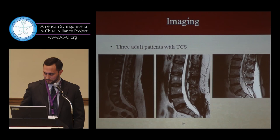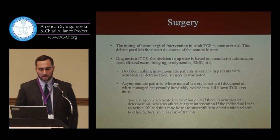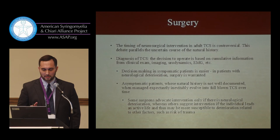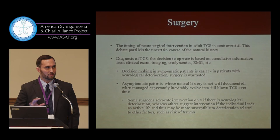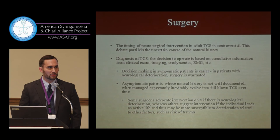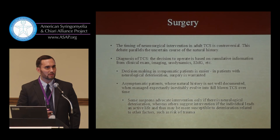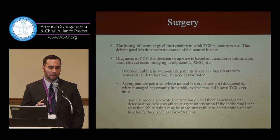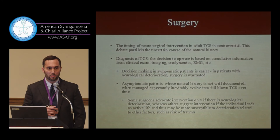The timing of neurosurgical intervention with adult tethered cord syndrome is a little controversial. The debate parallels how uncertain the natural history is — we don't know the long-term effects. The decision to operate is based on clinical examination, imaging, urodynamic studies, and EMGs. Decision-making is easier in symptomatic patients getting worse neurologically. In asymptomatic patients it's more debatable — some surgeons will operate prophylactically, but most surgeons follow patients clinically and operate once they see signs of deterioration.